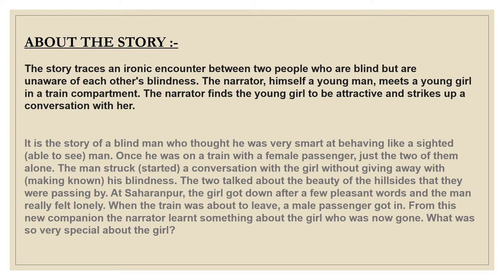We have already read the story and analyzed it in our first video on this lesson. In this video, we shall discuss the story in a little more detail along with the textual exercises. It is the story of a blind man who thought he was very smart at behaving like a sighted person. Once he was on a train with a female passenger, just the two of them alone.